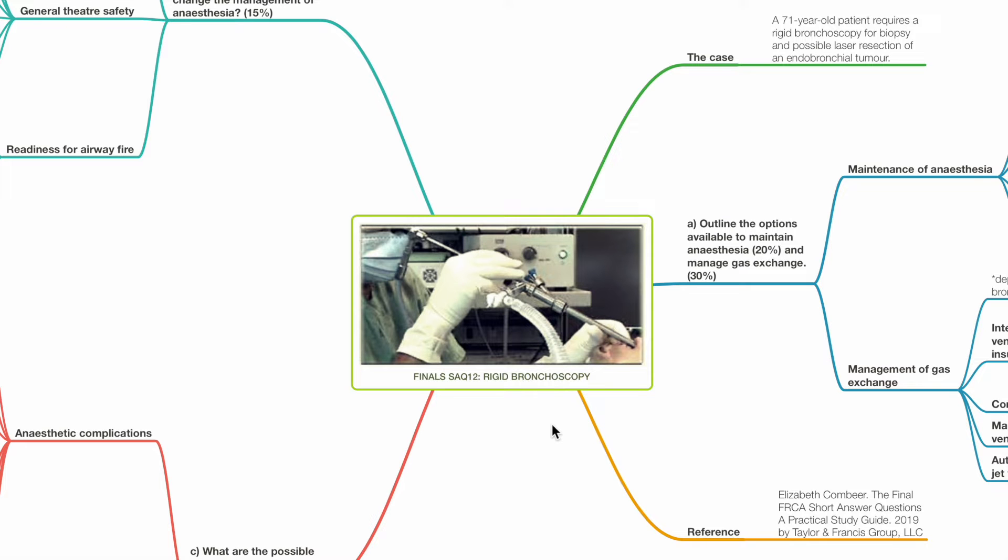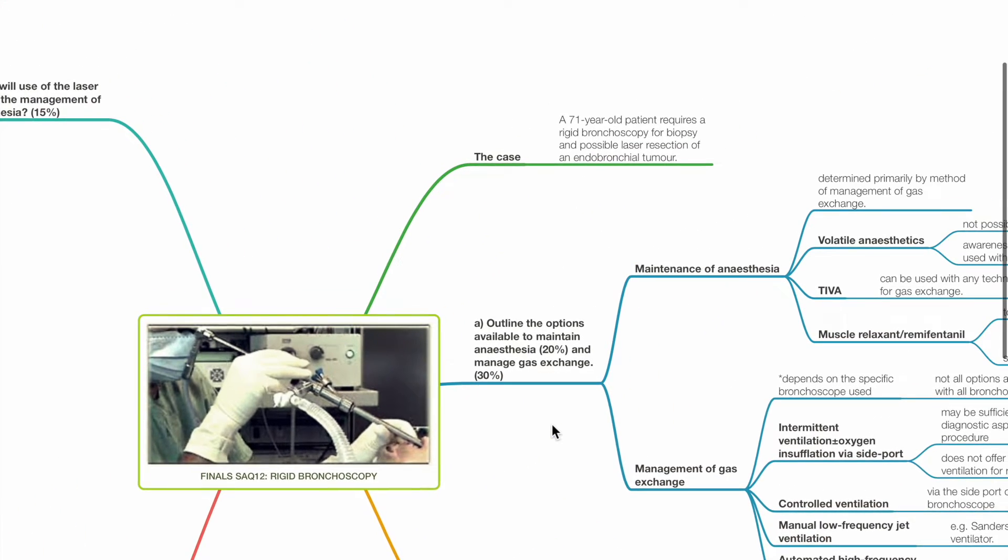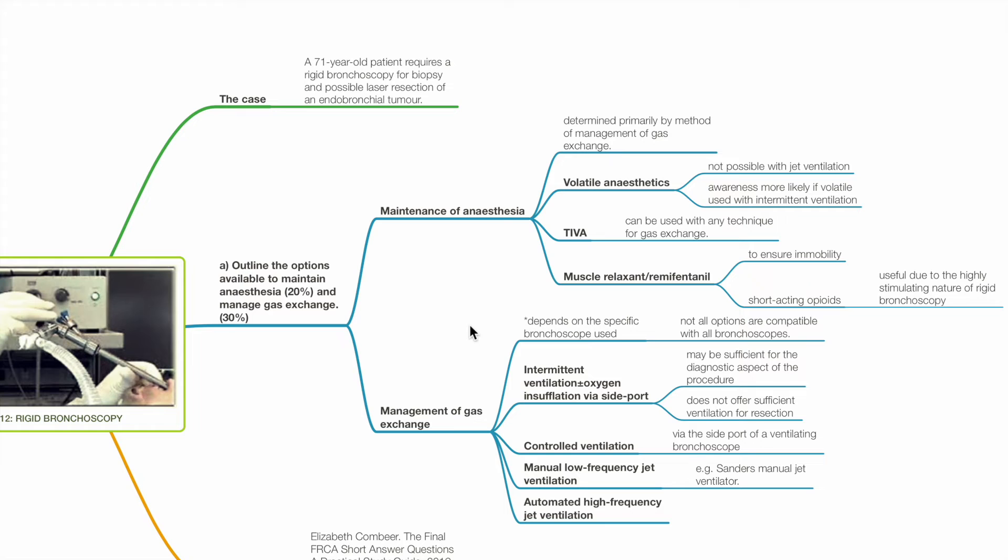SAQ 12, rigid bronchoscopy. The case: A 71-year-old patient requires a rigid bronchoscopy for biopsy and possible laser resection of an endobronchial tumor.